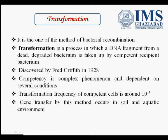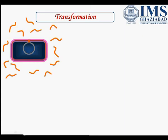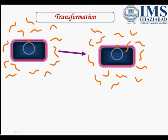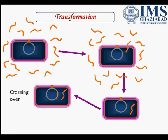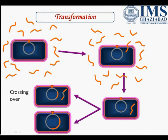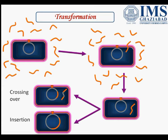Gene transfer by this method occurs mainly in soil and aquatic environments. In the diagram, you can see the bacterial cell with its chromosome, and the naked DNA present in the environment. In the second step, the bacterial cell becomes competent and starts uptake of DNA. The DNA then enters into the bacterial chromosome, where crossing over occurs between the naked DNA and the bacterial chromosome, or there is direct insertion of the naked DNA.